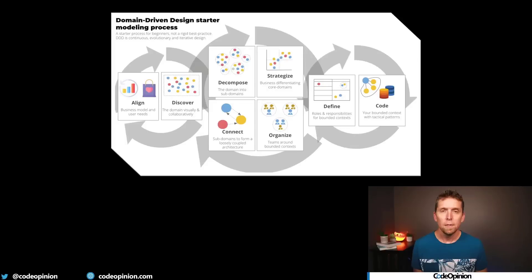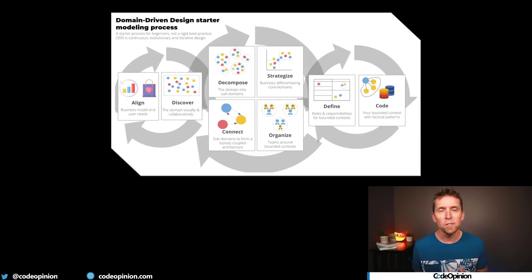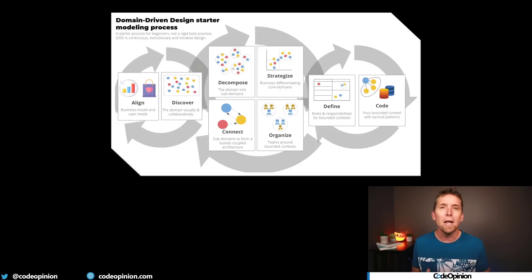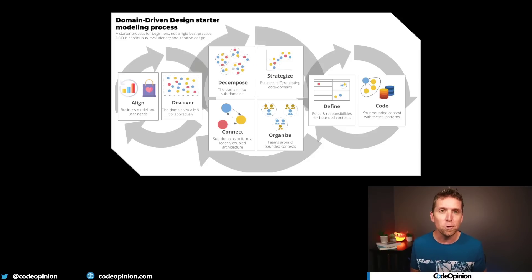Where should you start? You should start thinking about and caring about your domain. That means code is really the last aspect you're focusing on — not entirely, but it's not the only thing. There's a great graphic from dddcrew on GitHub — I'll link it in the description. At the very start it's about understanding the business model and the user needs, understanding the domain by doing things like event storming collaboratively with stakeholders in the domain to understand workflows, and then decomposing the system. Defining these logical boundaries is one of the most difficult but most important things to do.